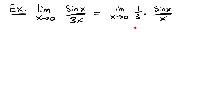This is exactly the same as before — multiplying 1/3 by sine x over x gives us our original expression; I just pulled out that scalar multiple of 1/3. Using our special limit property, the limit as x approaches 0 of sine x over x is 1, the limit of a constant is that constant, and the limit of two functions multiplied together is their limits multiplied. So this equals 1/3 times 1, which is 1/3.